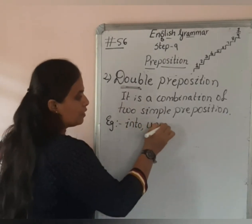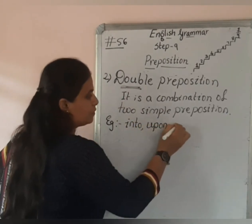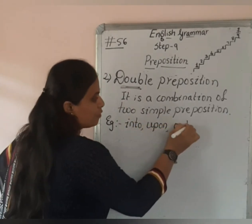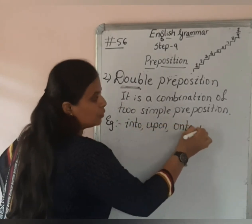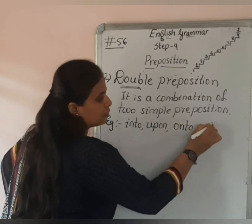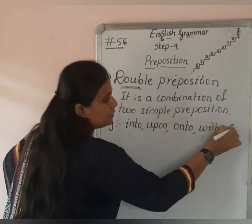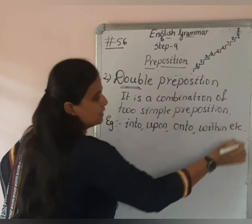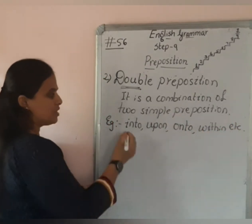Examples of double prepositions: into, upon, onto, within, etc. You can see here that 'into' is made up of two simple prepositions — 'in' and 'to'. Double prepositions are those which are a combination of two simple prepositions.